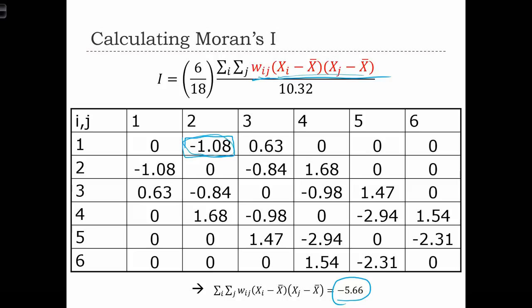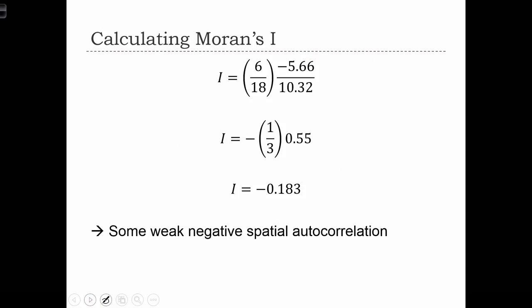And if we add up all of the cross product terms, overall, we find that the sum is negative. So right away, we know that Moran's i is also going to be negative. So we'll have negative autocorrelation. Let's just calculate the rest of the statistic.